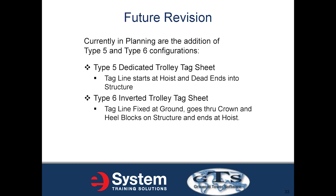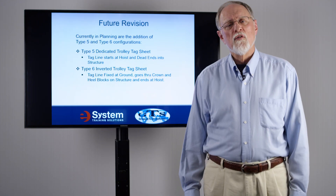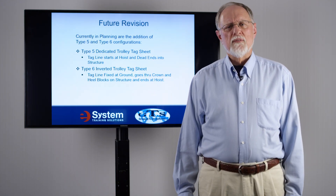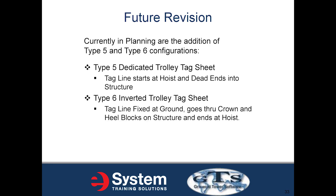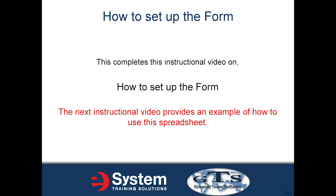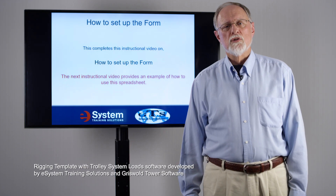Currently in planning are the addition of a Type 5 and a Type 6 lift configuration. A Type 5 is a dedicated trolley tag, where the tagline starts at the hoist and dead-ends into the structure or the gin pole. A Type 6 is an inverted trolley tag, where the tagline is fixed at the ground, goes through the crown block, down to the heel block, and back to the hoist. This completes the instructional video on how to set up the form. The next video provides an example of how to use this spreadsheet.